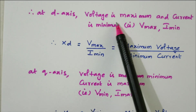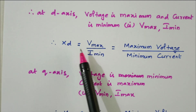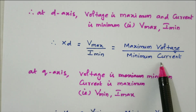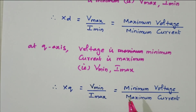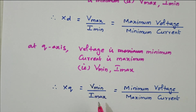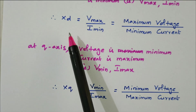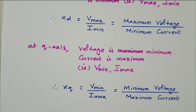At the d-axis, voltage is maximum and current is minimum (Vmax and Imin), so Xd = Vmax / Imin. At the q-axis, voltage is minimum and current is maximum (Vmin and Imax), so Xq = Vmin / Imax. When current is minimum and voltage is maximum, it is aligned with the d-axis; when voltage is minimum and current is maximum, it is aligned with the q-axis.